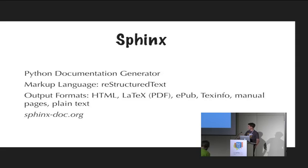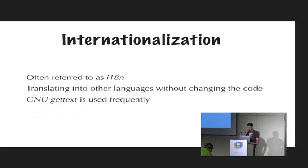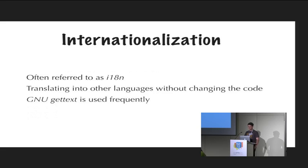Sphinx can be found on sphinx-doc.org, also the Sphinx documentation. And of course, as the title of the talk says, I'm talking about internationalization. It's often referred to as I18N because it has 18 letters, first is I, last is N — this is the common abbreviation for internationalization, especially if you look at module names in programming.